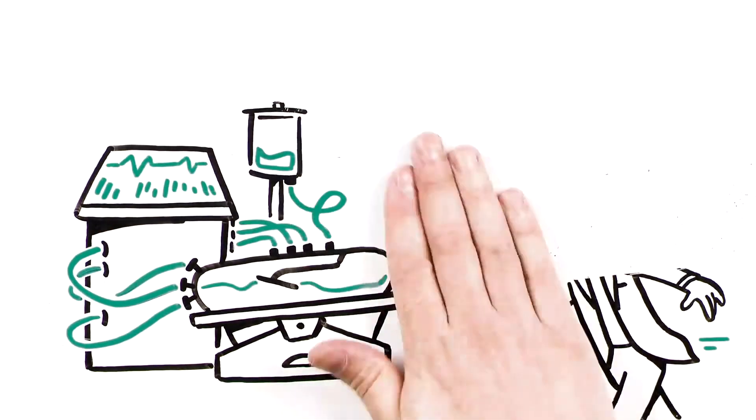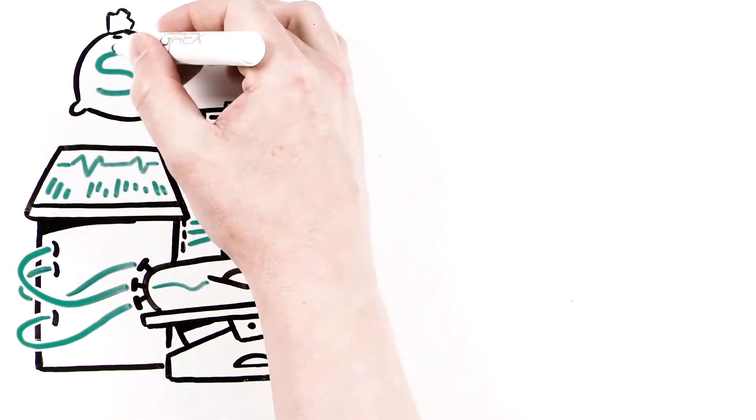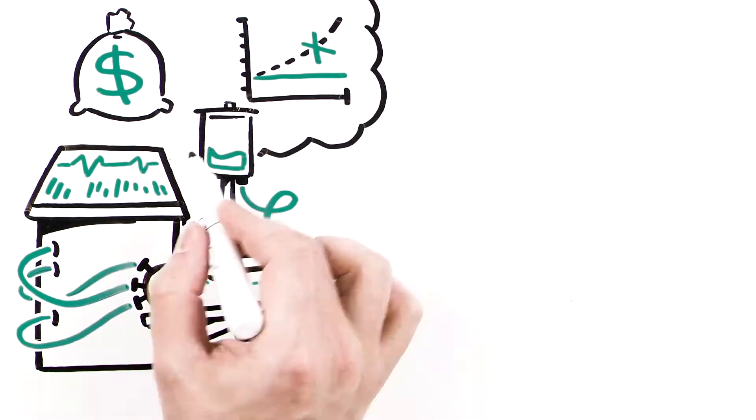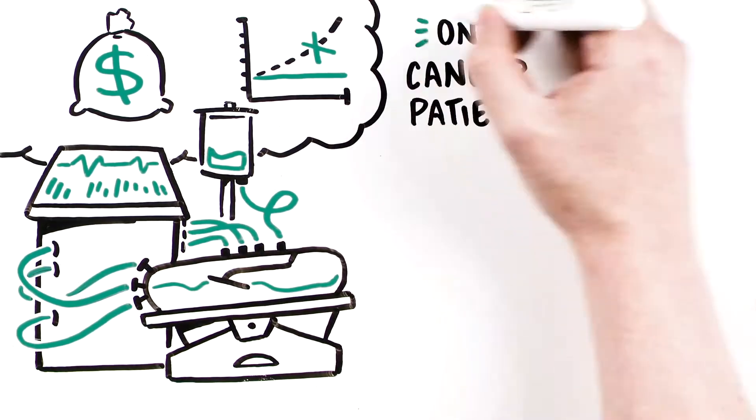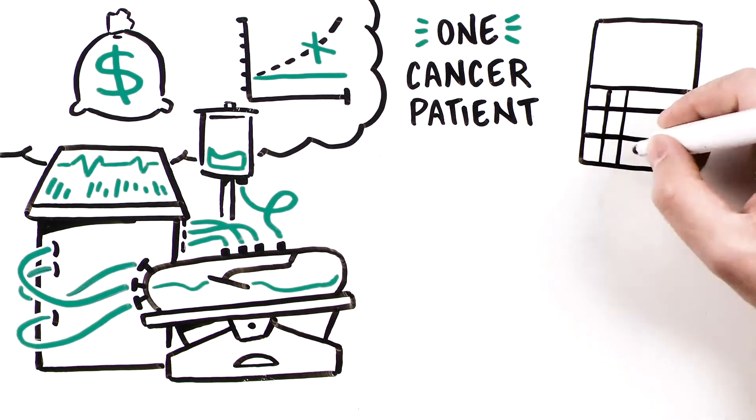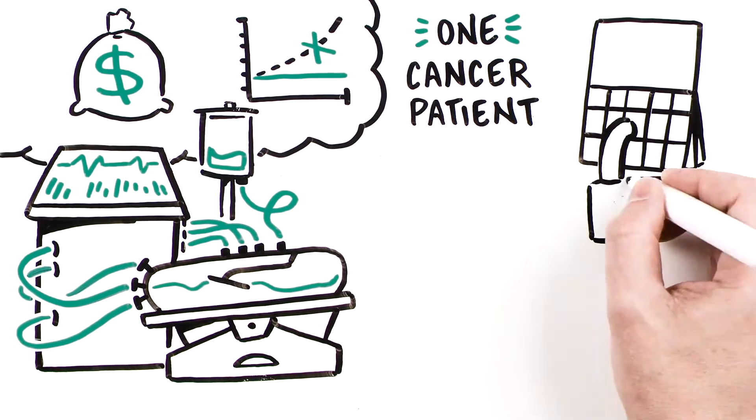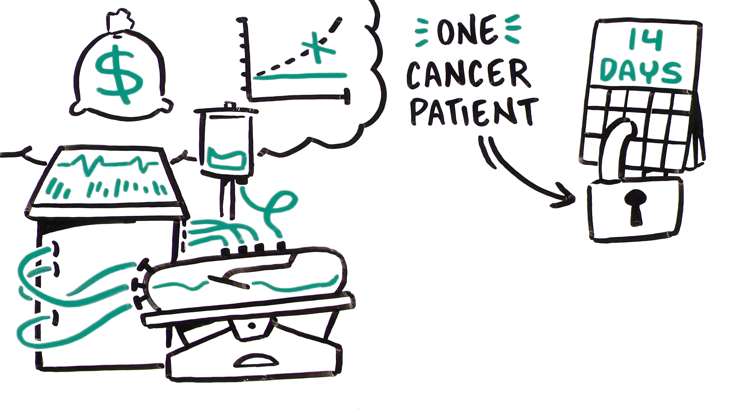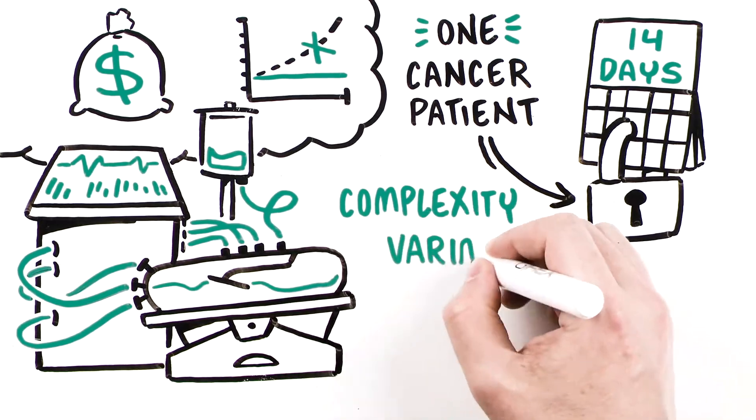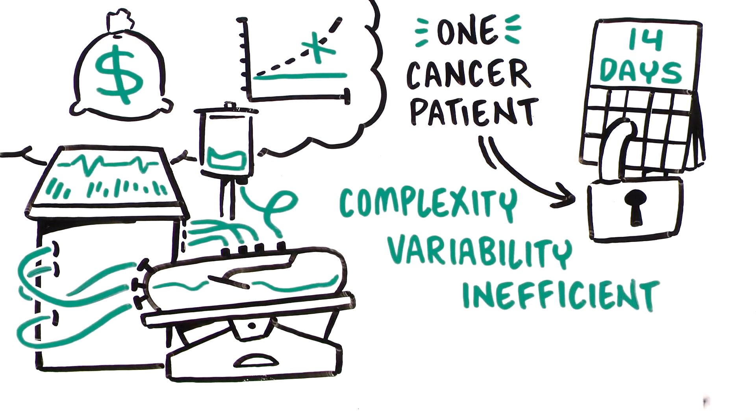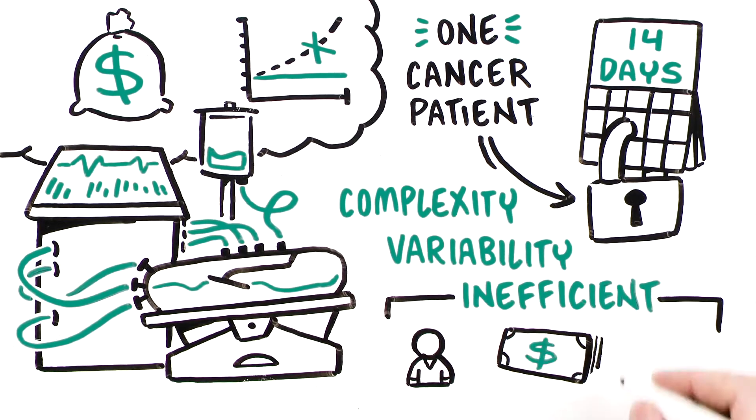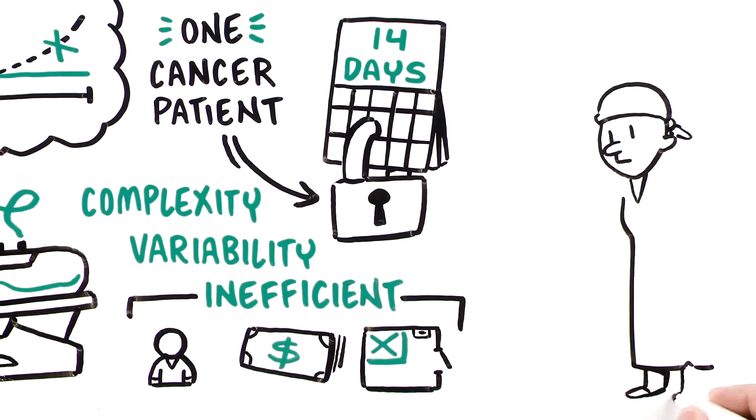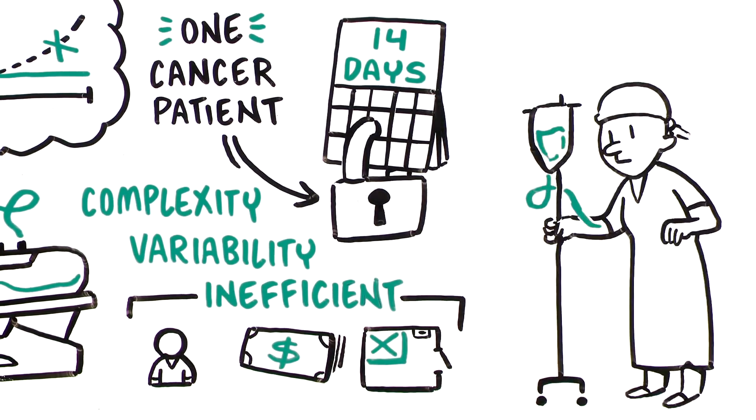Under the current paradigm, automated methods are neither cost-effective nor scalable. To create just one cancer patient's potentially life-saving therapy, the manufacturing process monopolizes a machine for up to 14 days, imposing complexity and variability while requiring highly inefficient use of labor, capital, and space. This jeopardizes the potential of T-cell therapy to reach those in need.